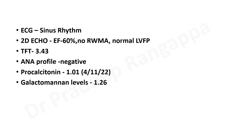Complements were normal — so no active autoimmune process. Despite high CRP and ESR, complements being normal means there was no cytokine activation driving complement consumption. ANA was negative. So the key question was: how do we rule out PCP in this patient?